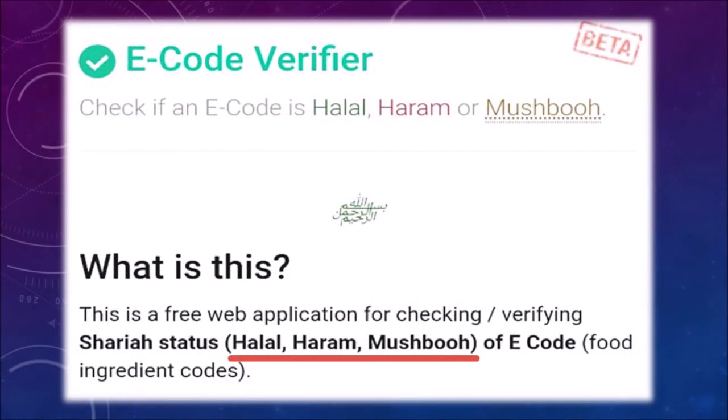Now, if you have a free app called E-Code Verifier installed on your cell phone, you can enter the E-code into the app. The app will then tell you one of three things about the product ingredients: first, it is halal; or it is haram; or yet another possibility is it may be mashboo — that means there is a doubt.